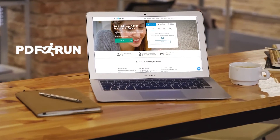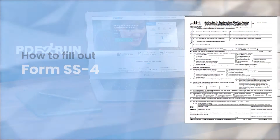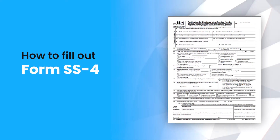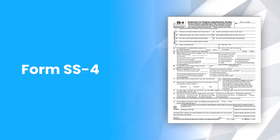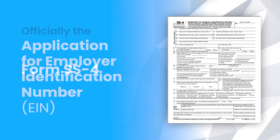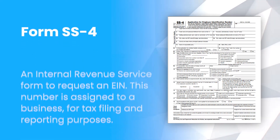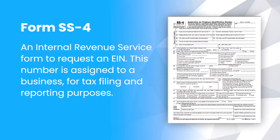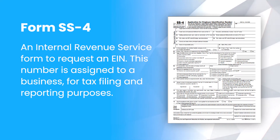Welcome to PDF Run. In this video, we'll guide you on how to fill out Form SS4. Form SS4, officially the Application for Employer Identification Number (EIN), is an Internal Revenue Service form to request an EIN. This number is assigned to a business for tax filing and reporting purposes.